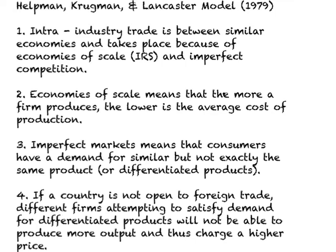The model to explain intra-industry trade is due to economists Helpman, Krugman, and Lancaster — we can call this the HKL model — published around 1979. Their intuitive explanation starts with what we already know: trade between similar developed economies takes place because of economies of scale, increasing returns to scale, and imperfect competition, where consumers demand similar but not exactly the same, or differentiated, products.